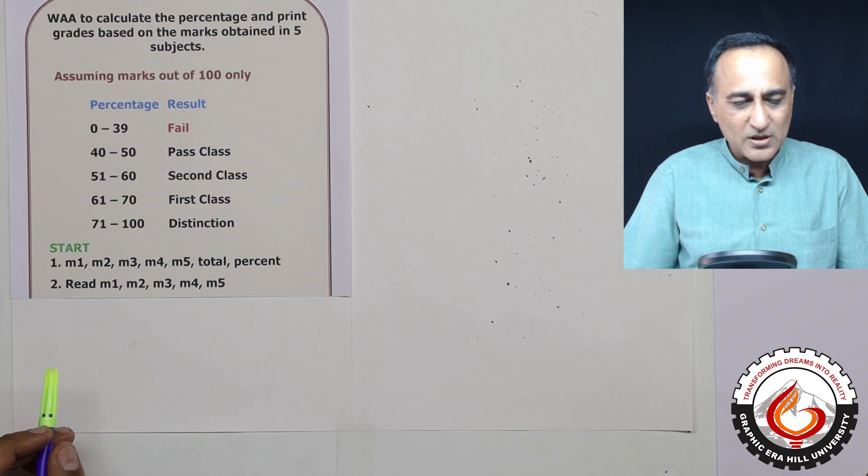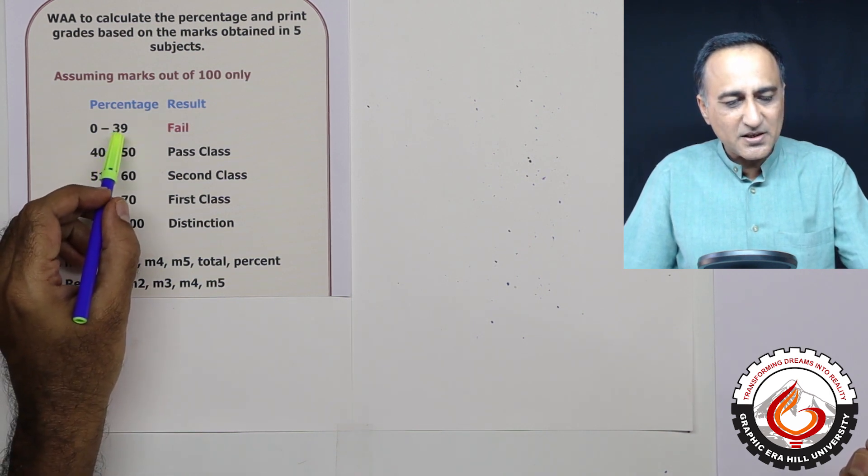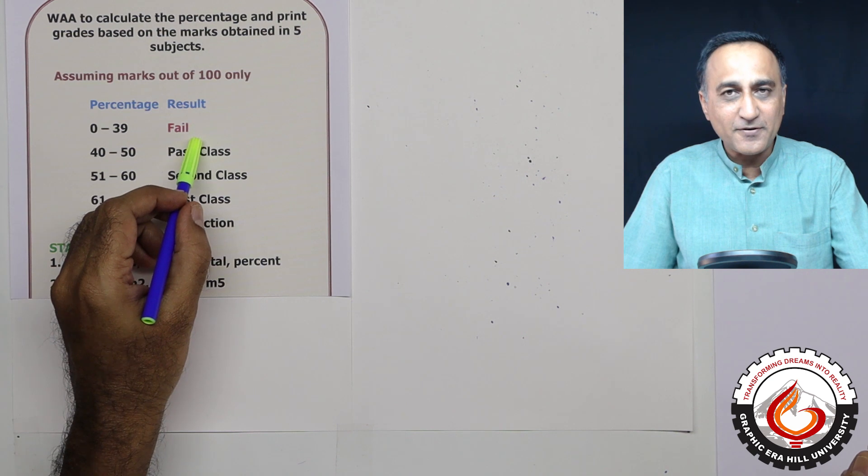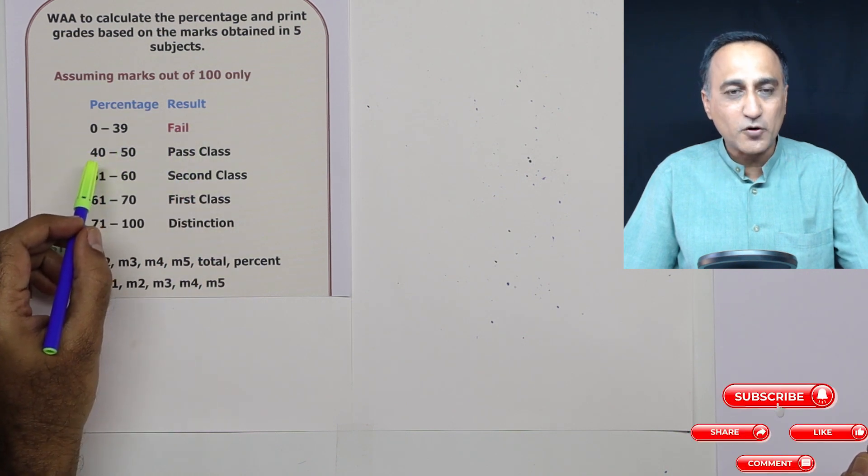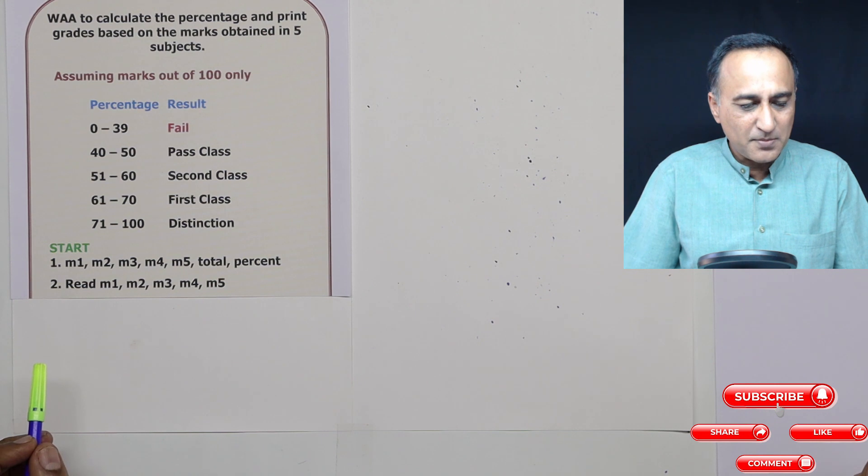You need to understand a few things here. Even if it is 39.9998, it will still be fail, it has to be completely 40. So this is the first assumption we are making.